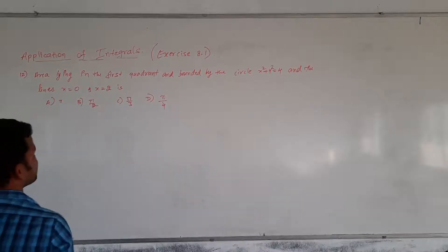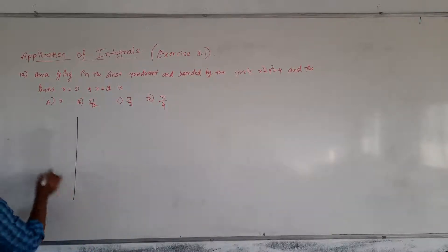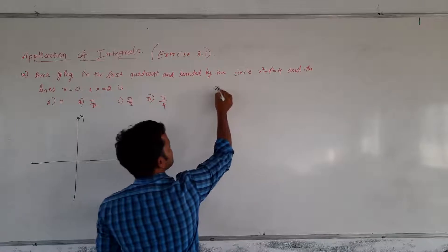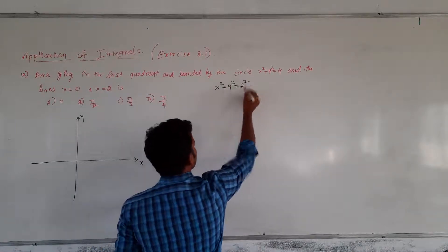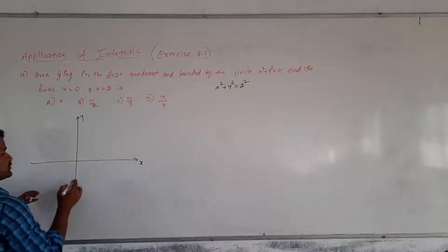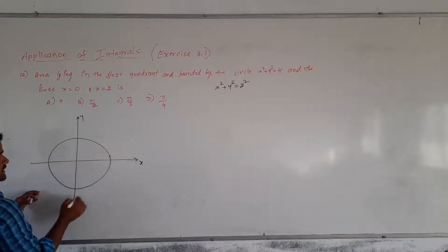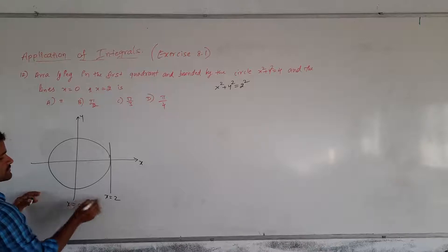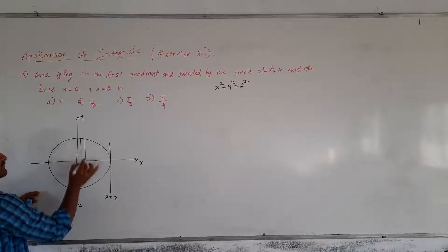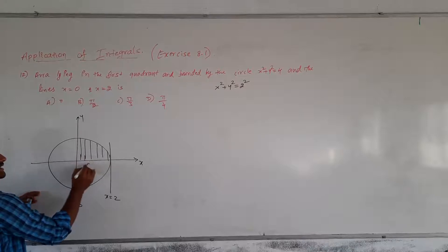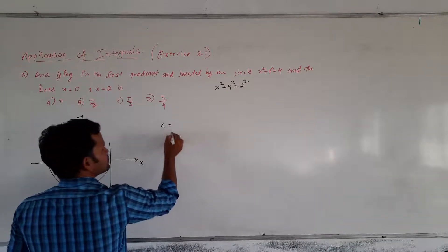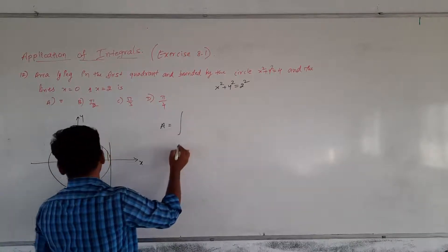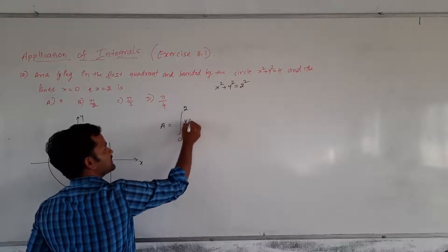Area lying in the first quadrant bounded by the circle x² + y² = 4, which can be written as x² + y² = 2². The radius is 2. They asked to find the area between x = 0 and x = 2 in the first quadrant — be careful. Since only the first quadrant is asked, no need to take 4 times. Area = integral from 0 to 2 of y dx.